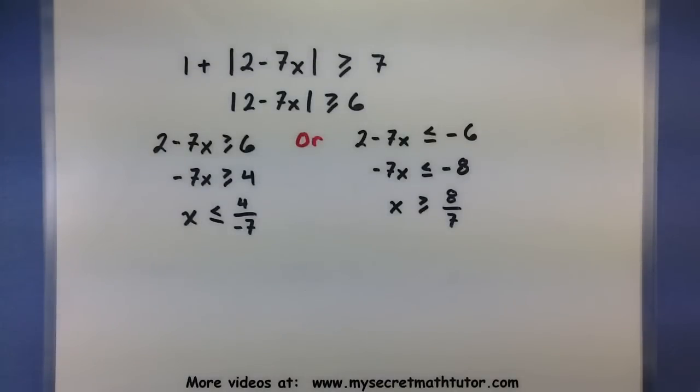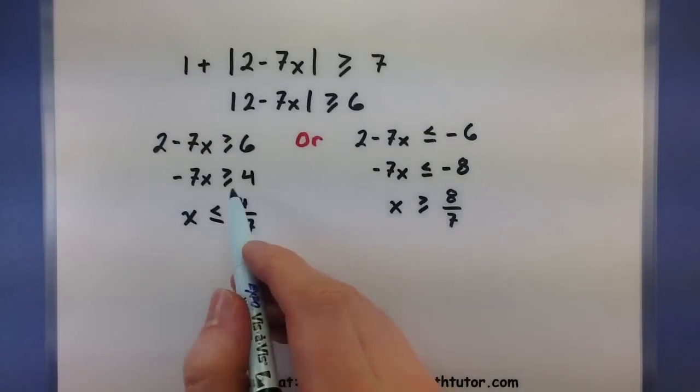Well, OR is a little bit more flexible. This says that as long as I satisfy this condition, OR I satisfy this condition, then it is going to be a solution. So as long as it satisfies one of them, we're good to go. Let's write this in interval notation.